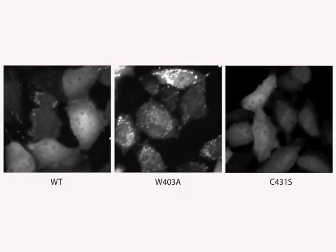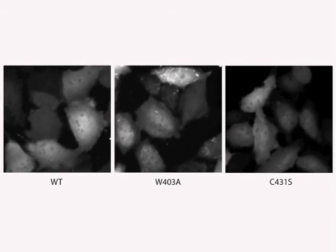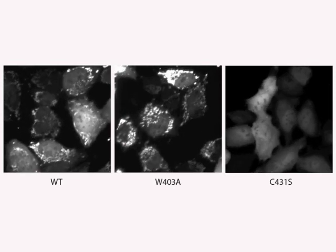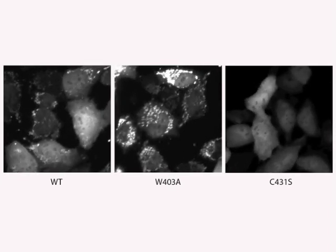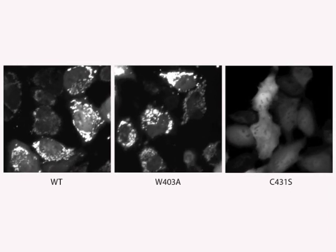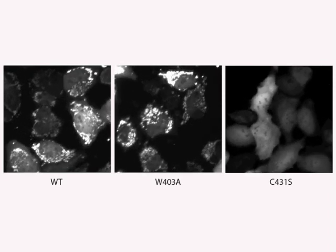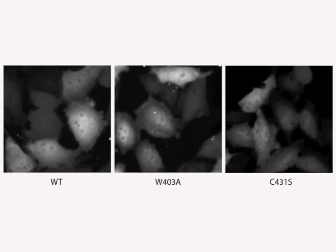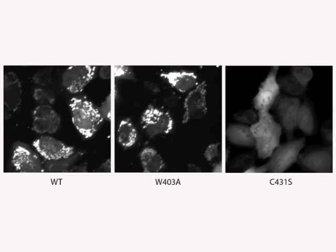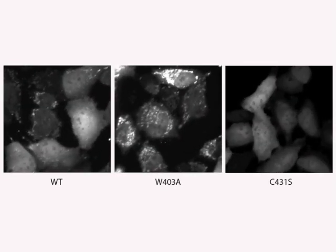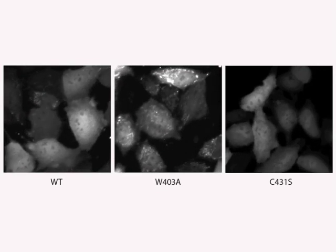Our structure therefore predicts that an artificial mutation of W403 should enhance the binding of proteins like UBCH7 and thus stimulate Parkin's activity, whereas mutation of C431 should abolish it. In cells, Parkin's activity can be assessed by its localization to mitochondria, a cellular organelle responsible for energy production. Parkin acts like a watchdog for cells by sensing damaged mitochondria and targeting them for degradation. Live cell microscopy shows that upon addition of a compound that damages mitochondria, Parkin's distribution becomes gradually more punctate as it localizes to mitochondria. The W403A mutant localizes notably faster than normal Parkin, whereas the C431A mutant fails to localize. Thus, our structure provides a framework to enhance Parkin's activity for therapeutics in Parkinson's disease.